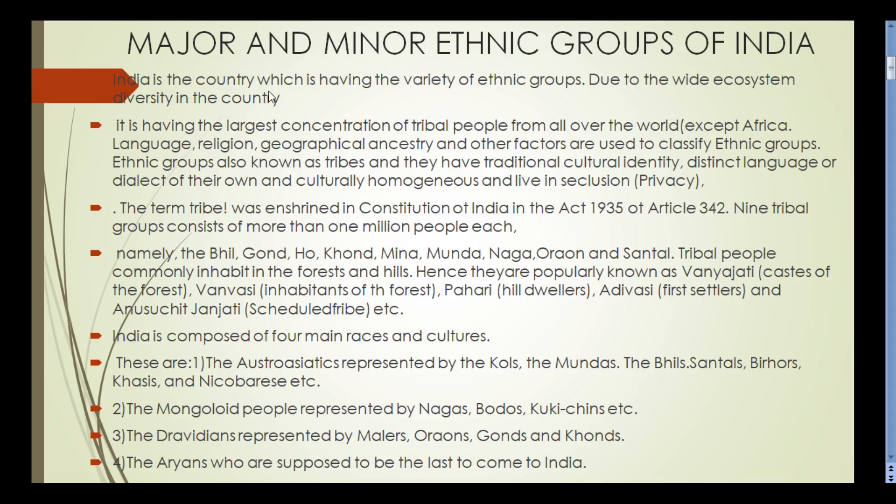India has different varieties of ethnic groups — different varieties of tribal groups — due to the wide ecosystem diversity in the country. India has different climatic conditions and the largest concentration of tribal people from all over the world, except Africa. Tribal people are classified based on language, religion, geographical ancestry, and other factors. Ethnic groups, also known as tribes, have traditional cultural identity, their own language, cultural activities, and dressing styles.